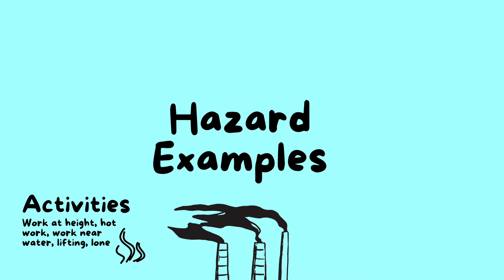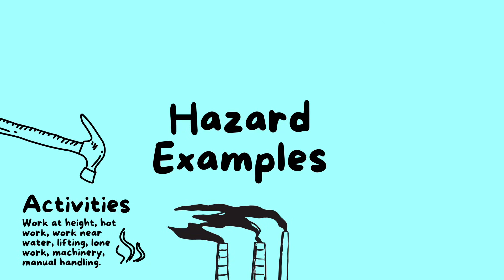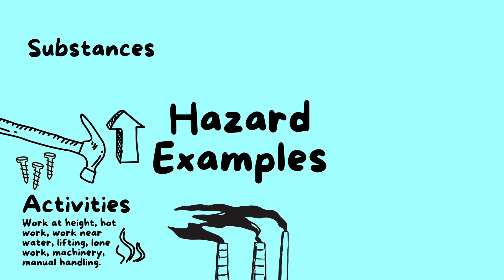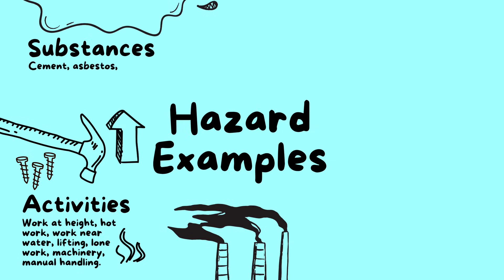Examples of work activity hazards include work at height, hot work, work near water, lifting, lone work, machinery, and manual handling.